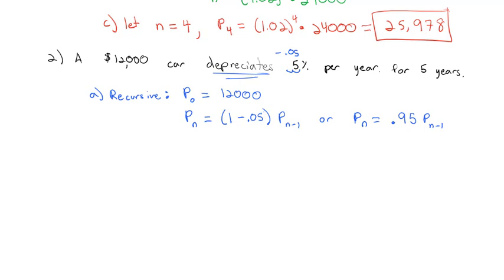But again, we don't want to work this formula out five times with the recursive formula. The explicit formula is probably much better to work with, which says P sub n equals the common ratio times the starting value, which is 12,000. Common ratio is 1 minus 0.05, and we just raise it to the n power. Or P sub n equals 0.95 raised to the n times 12,000.